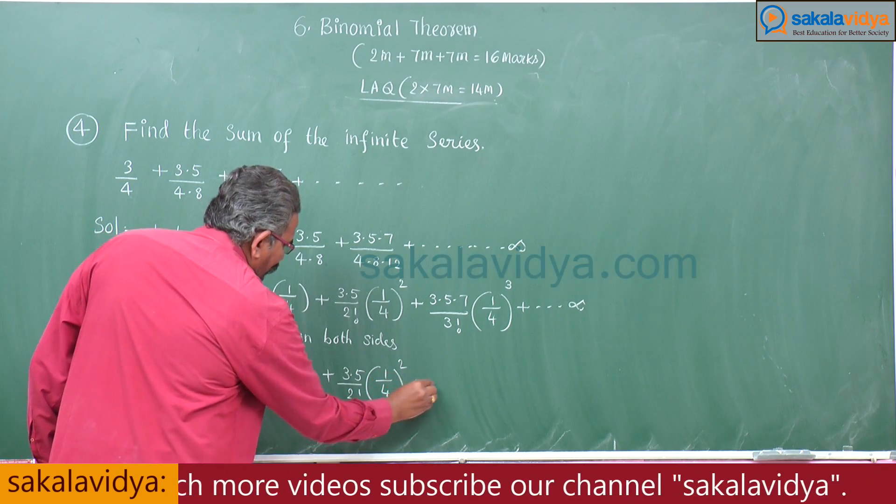An infinite series must always begin with 1, but 1 is not here — sometimes one or two terms may be missing. Let the required sum S = 3/4 + (3·5)/(4·8) + (3·5·7)/(4·8·12) + ... up to infinity.